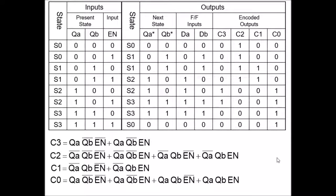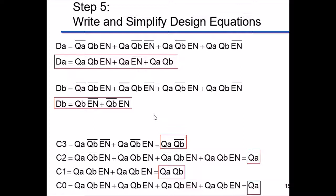On the next slide, I simplify the equations using Boolean algebra. For DA, factoring common terms — for example, two terms both contain QA and not-enable, so factoring those out leaves (not QB OR QB), which equals one, giving just QA AND (not enable). Each simplified equation is shown in a red box. You should be able to handle the Boolean algebra to simplify these terms.